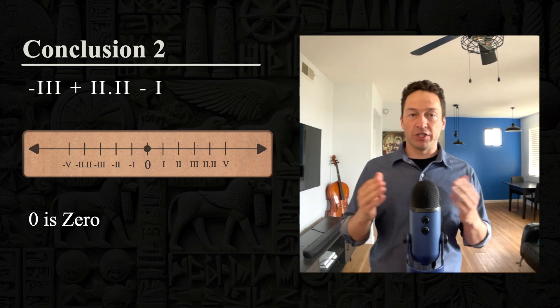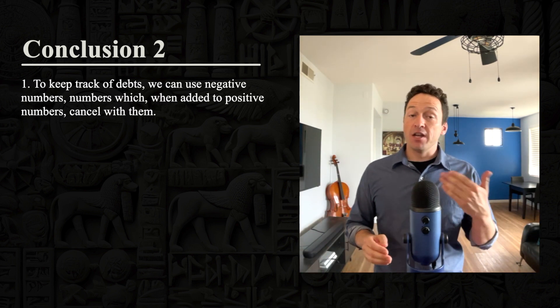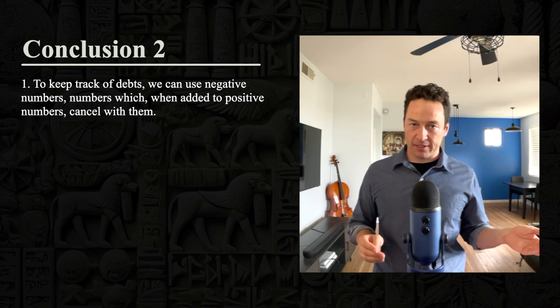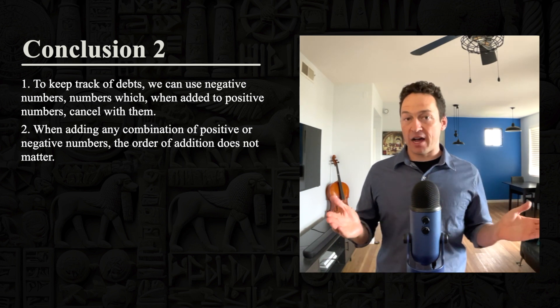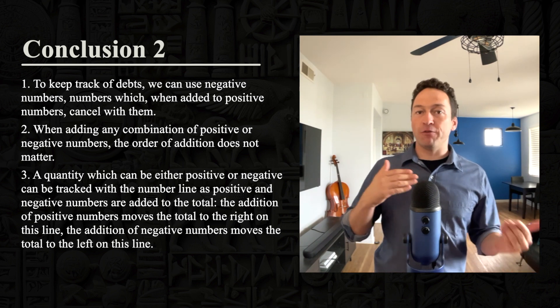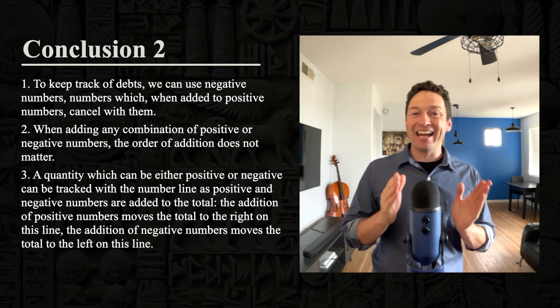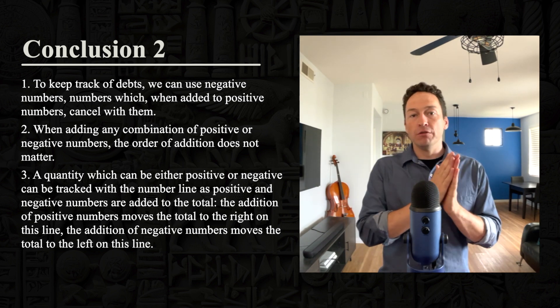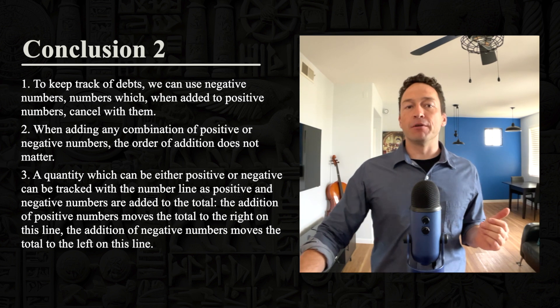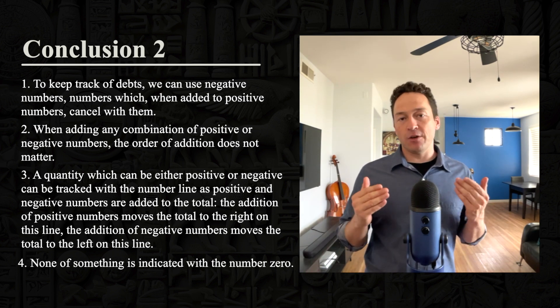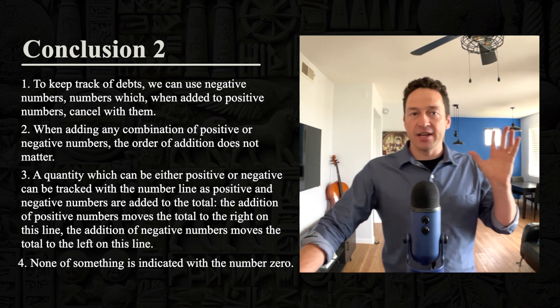Conclusion two. Number one: to keep track of debts, we can use negative numbers - numbers which, when added to positive numbers, cancel with them. When adding any combination of positive or negative numbers, the order of addition does not matter. Number three: a quantity, which can be either positive or negative, can be tracked with the number line. The addition of positive numbers moves the total to the right on this line. The addition of negative numbers moves the total to the left on this line. And finally, number four: none of something is indicated with the number zero. It's possible to have none of something now that we understand it in this broader context.